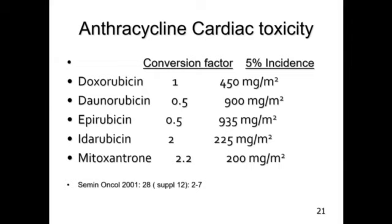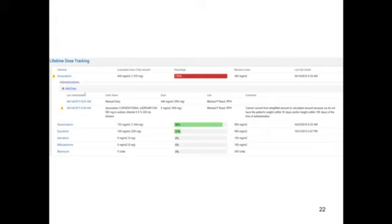There is a conversion factor because the anthracyclines are not all the same in their toxicity. Doxorubicin at 450 mg/m² gives a 5% incidence. Daunorubicin is half as cardiotoxic, so you can tolerate twice as much, while idarubicin is twice as toxic — giving it a factor of 2 — so you can tolerate half as much. When we order and verify chemotherapy, we convert to doxorubicin equivalents. In Epic, you can go to lifetime dose tracking to see the total anthracycline exposure — for example, showing 110% of the maximum set dose.